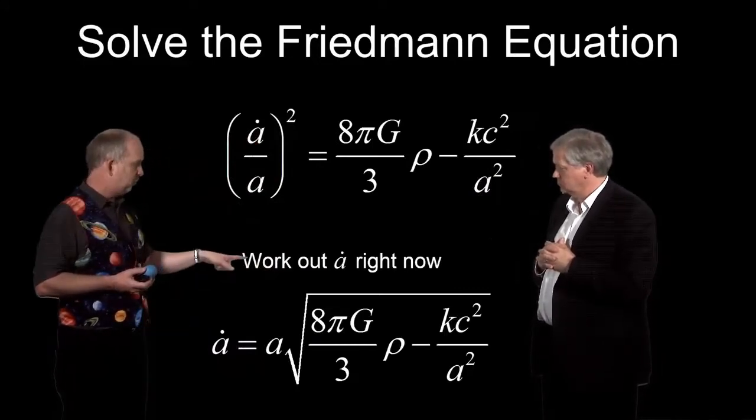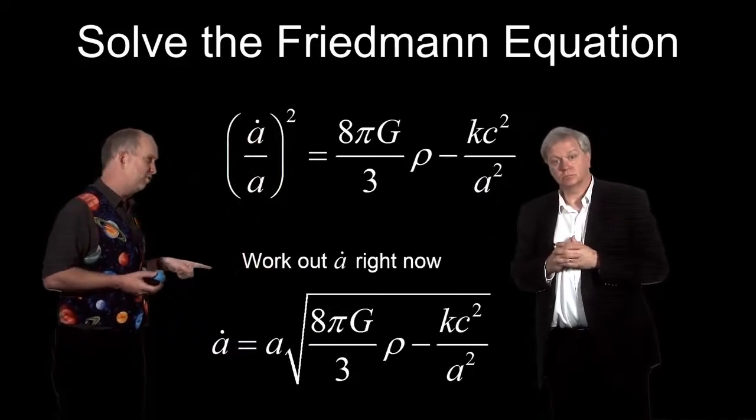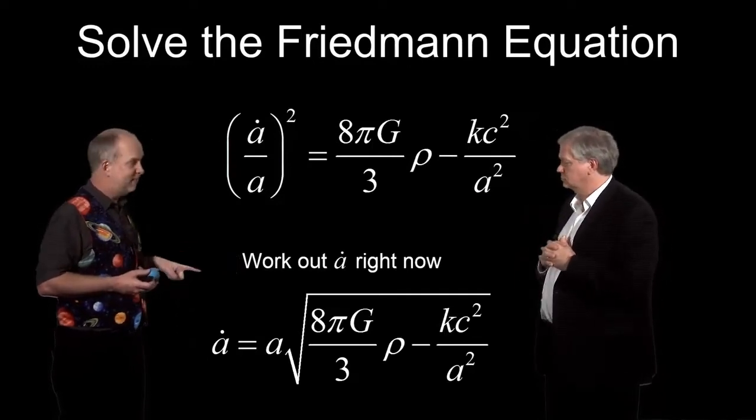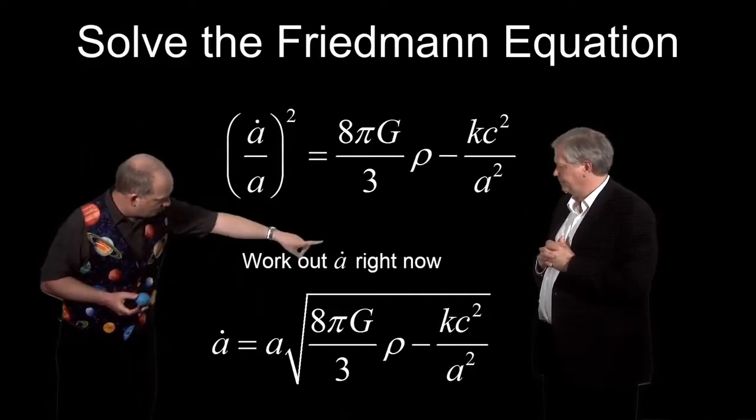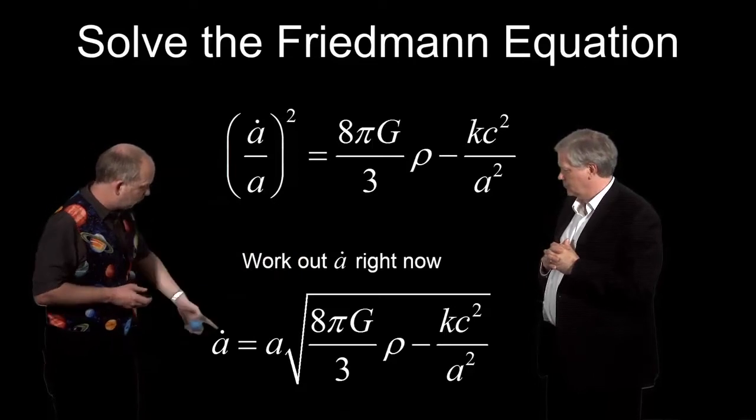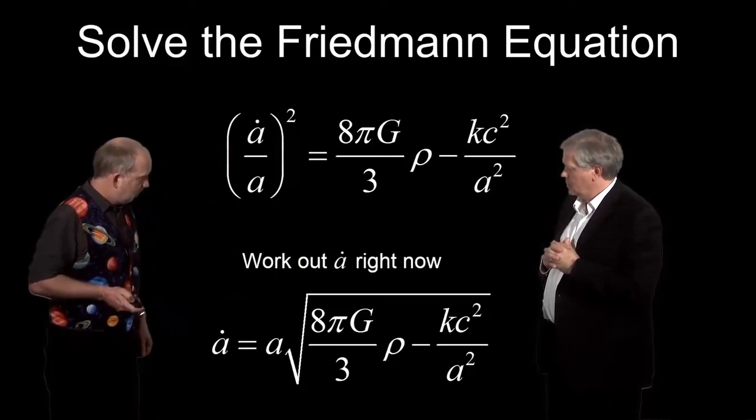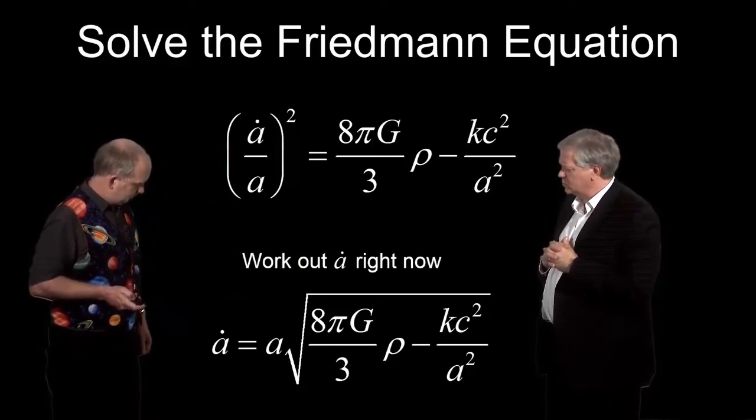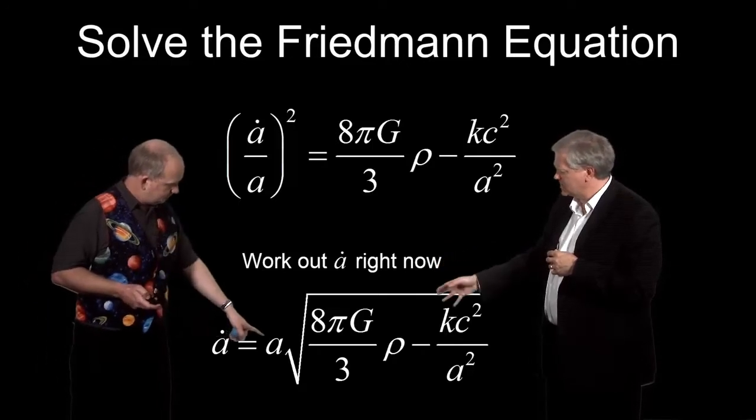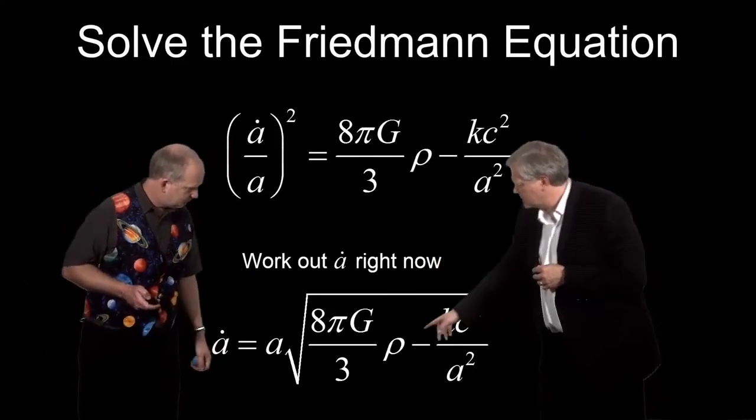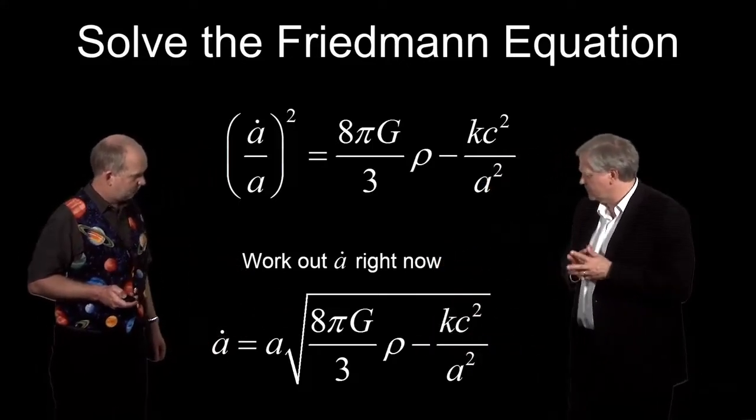So what we need to do is work out a dot, which is the rate of change of the scale factor, dA by dt, right now. And it's given by just rearranging this equation, taking the square root and moving A up the side there. So we have the change of A is equal to A plus this other junk, some of which is going to change also as a function of A.